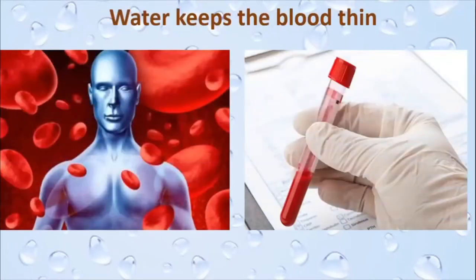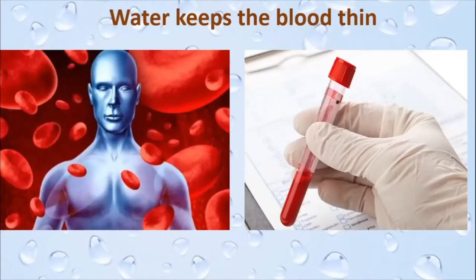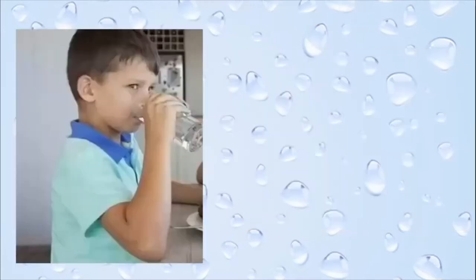Water keeps the blood in our body thin. You know, children, that blood has to flow throughout our body. If blood does not flow throughout our body, our body will not get oxygen and then we will die. So if the blood has to flow properly, it has to be thin. Sometimes when people's blood becomes thick, they get a heart attack and they die. It is water which helps to keep the blood thin and watery. The blood remains thin if you drink enough water.